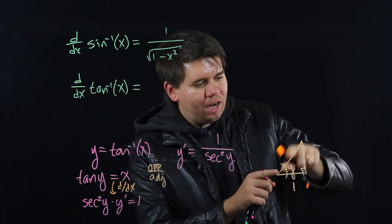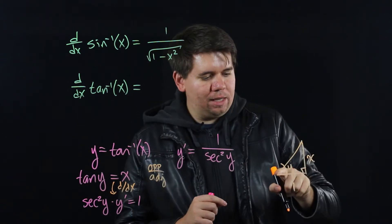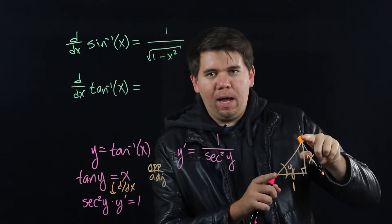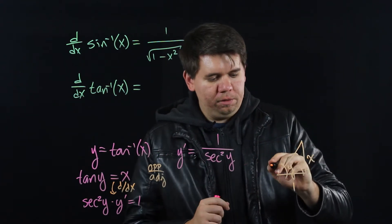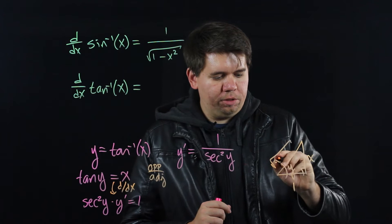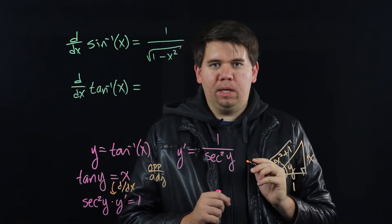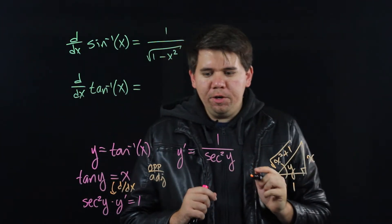If I want to find the hypotenuse, I can use Pythagoras to say that the length of the hypotenuse must be the square root of x squared plus 1 squared. The square root of x squared plus 1. And now I know, what is y prime?